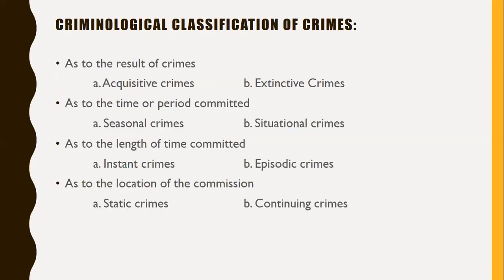These are the criminological classifications of crimes. First, as to the result of crimes, we have acquisitive crimes and extinctive crimes. Acquisitive crime: the offender acquires something as a consequence of their criminal act. Extinctive crime: the result of the criminal act is destructive.